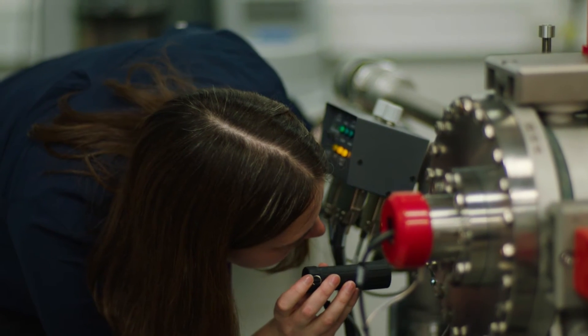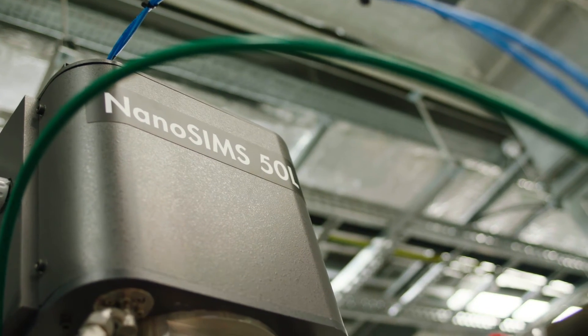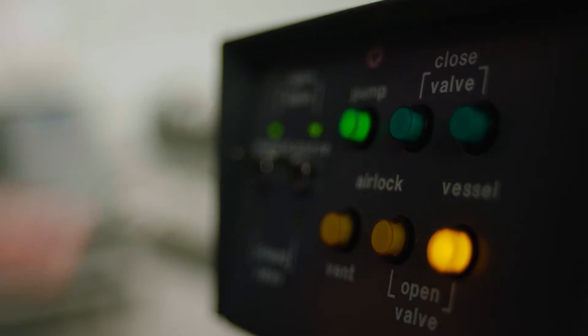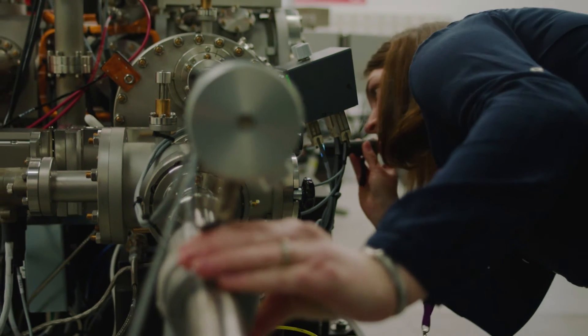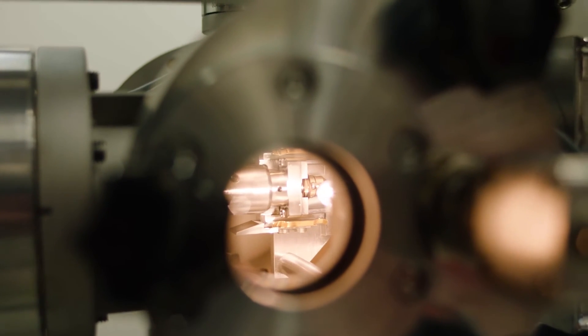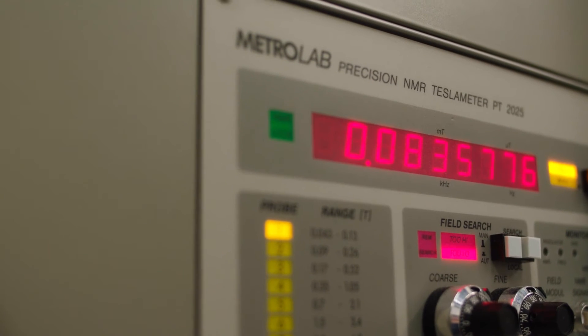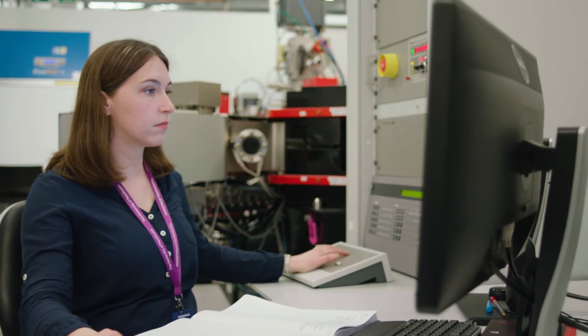The instrument that I work with mainly is called nano-sims. It's the only technique worldwide that can get a real fundamental understanding of where hydrogen is going inside these metals. There are only 40 of them worldwide, three in the UK. They cost about three million pounds each. You can do things that other microscopes can't do. This is something that's really groundbreaking, so it's all brand new information and that's what I really enjoy.